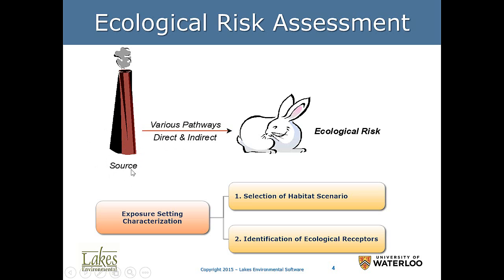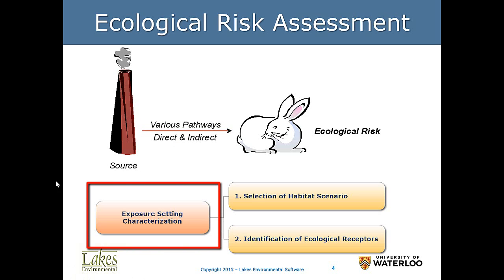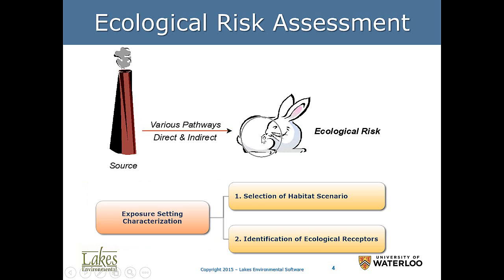Ecological risk assessment is composed of the idea of getting a source — which could be a stationary source or mobile source — seeing direct pathways, which include direct inhalation in humans and direct inhalation by animals, and indirect pathways. Most of the food web will be contaminated through indirect pathways. We need to assess and characterize the exposure from ecological receptors from mobile or stationary sources.